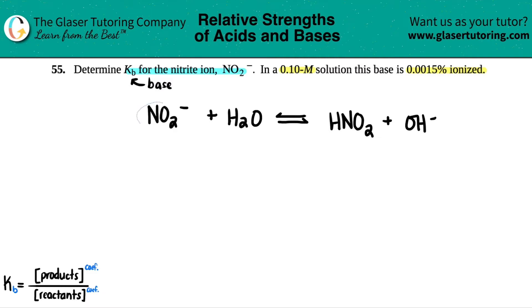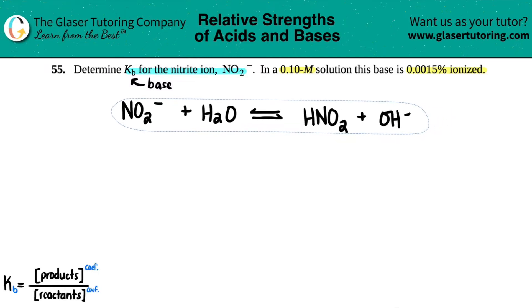Another way to know whether you're dealing with an acid or a base is that since we produced OH minus in solution, we're going to solve for a KB. But if you have H3O plus at the end of the day, that's a KA value. KB values are found by doing concentration of products divided by reactants, and this is always at equilibrium.